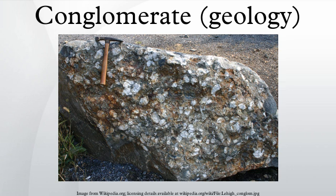Glaciers carry a lot of coarse-grained material and many glacial deposits are conglomeratic. The sediments deposited directly by a glacier are typically poorly sorted, matrix-supported conglomerates. The matrix is generally fine-grained, consisting of finely milled rock fragments. Water-laid deposits associated with glaciers are often conglomeratic, forming structures such as eskers.